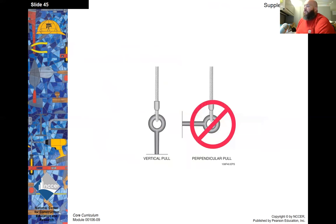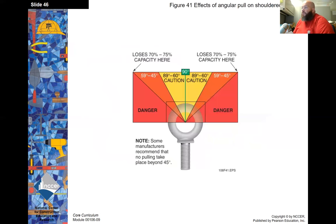When you have an unshouldered eye bolt, it's for a vertical pull only — pulling perpendicular will cause the eye bolt to fail. For angular pulls on shouldered eye bolts, 90 degrees is the ideal angle. You can pull out to about a 45-degree angle, but that results in a 70 to 75 percent reduction in load capacity.